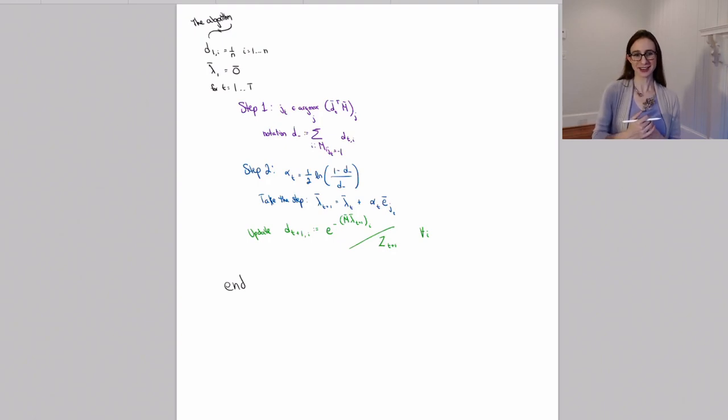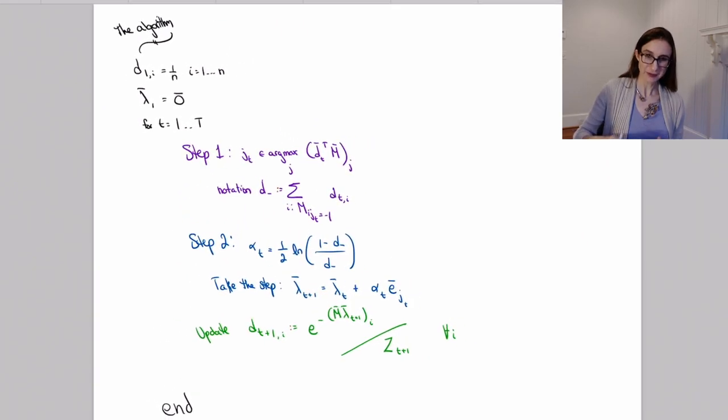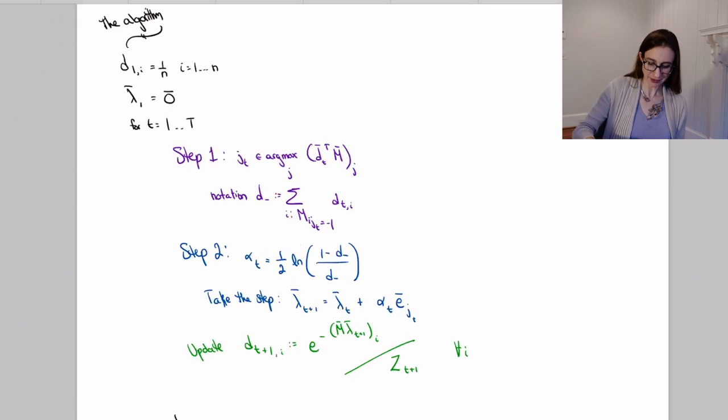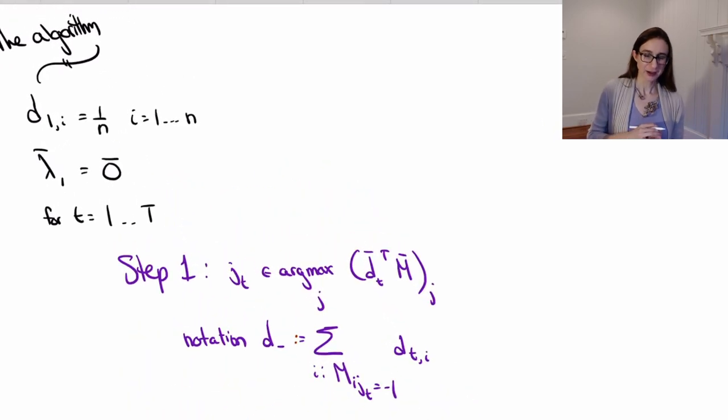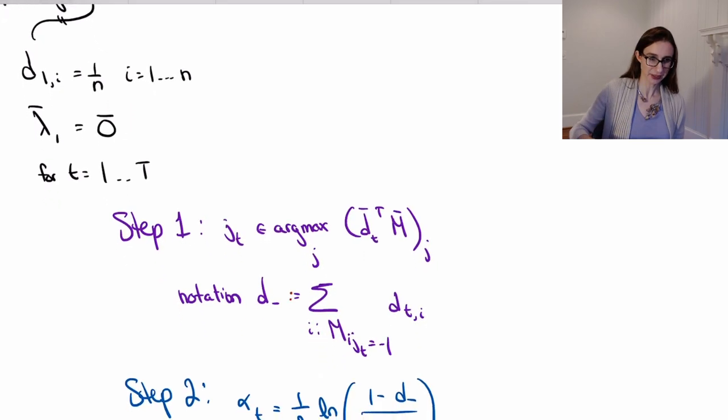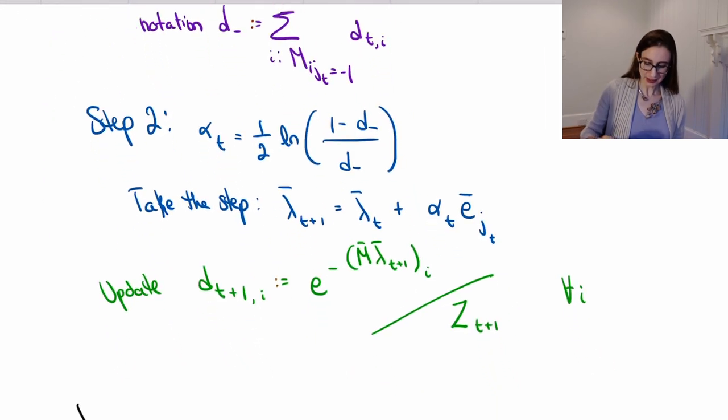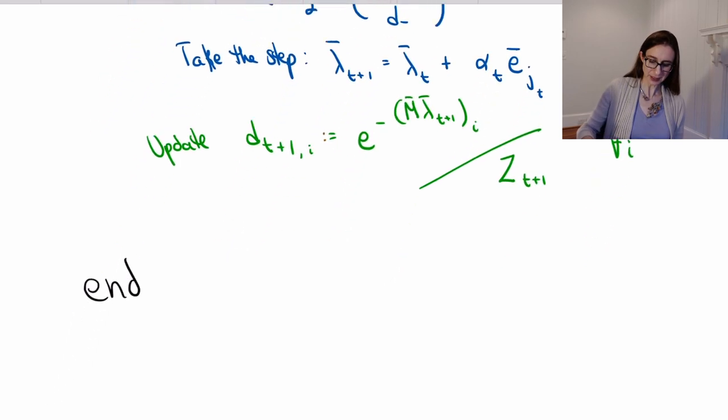Alright, so I have one last thing left to do to make this version of coordinate descent look like adaboost. We've already resolved that in step one we're using a weak learning algorithm which is minimizing the weights on the misclassified points, and that's the same thing as I've written here as we showed in the last video. So now in this video we have to resolve the weight update rule.